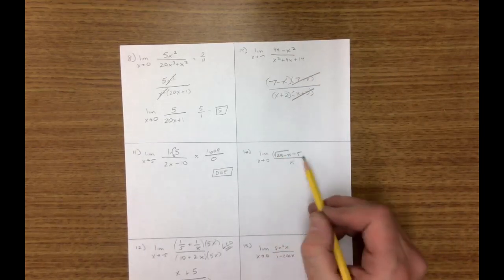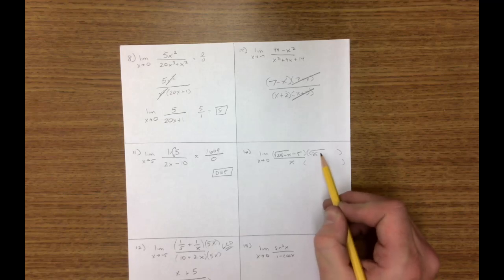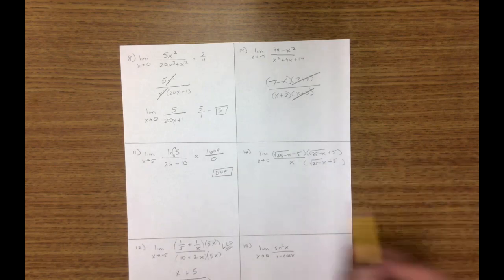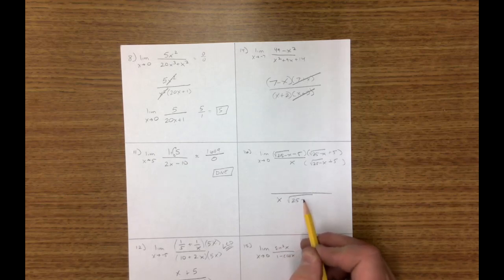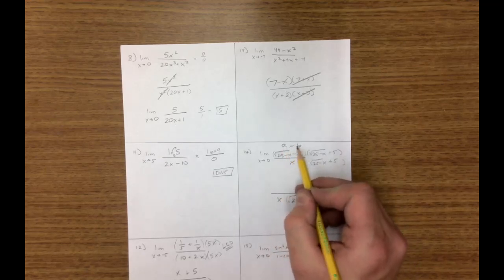On this one, I'm going to multiply by the conjugate. Root 25 minus x plus 5 over root 25 minus x plus 5 here. I'm going to leave the bottom the same. Don't mess with the bottom. It usually does nothing happens with the denominator. But up in the numerator, this is a minus b, a plus b.